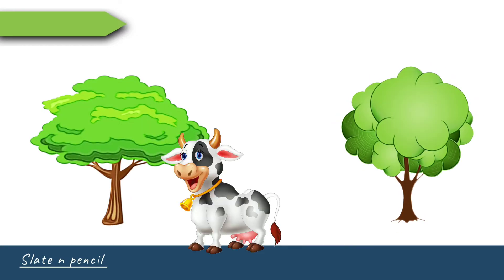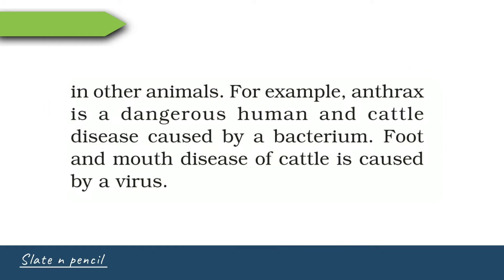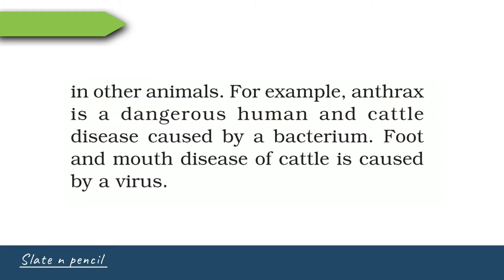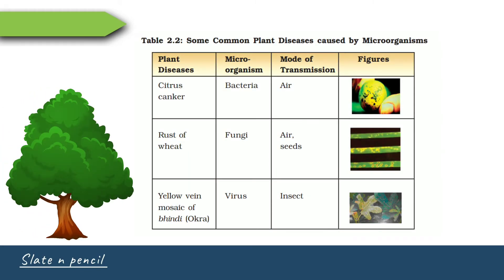Microorganisms also cause diseases in animals and plants. Anthrax is a dangerous disease in humans and cattle caused by a bacterium. Robert Koch first discovered Bacillus anthracis in 1876 — the bacteria which causes anthrax. Foot and mouth disease in cattle is caused by a virus. Common plant diseases caused by microorganisms include citrus canker caused by bacteria, rust of wheat caused by fungi, and yellow vein mosaic of bhindi caused by virus.